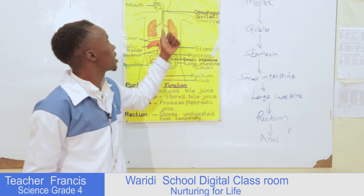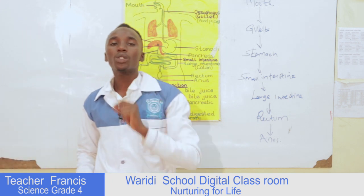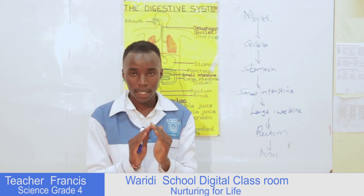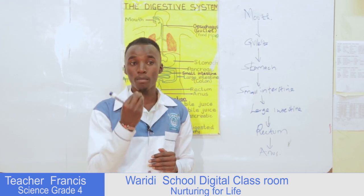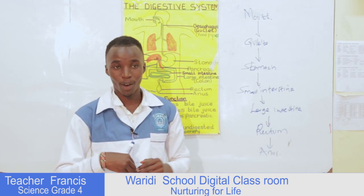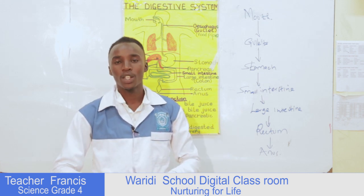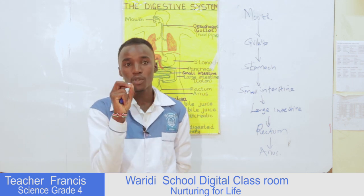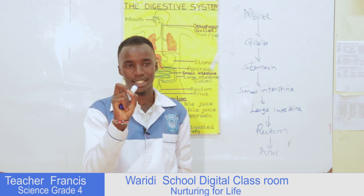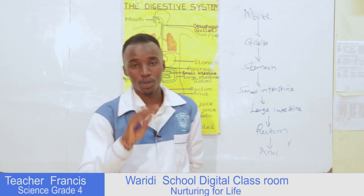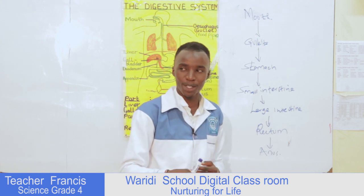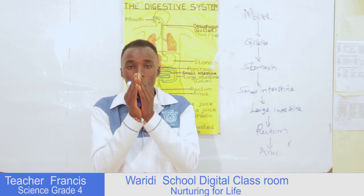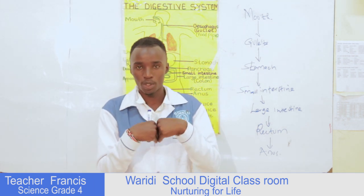Starting from the mouth. Once you take your food into the mouth, that food has to be broken down into small pieces so that you are able to swallow them into other parts of the alimentary canal. With the help of the teeth, that food is broken down into small pieces with the mixture of saliva. Saliva and the teeth work together — as the teeth break down the food, saliva helps to mix it so that swallowing becomes easy.